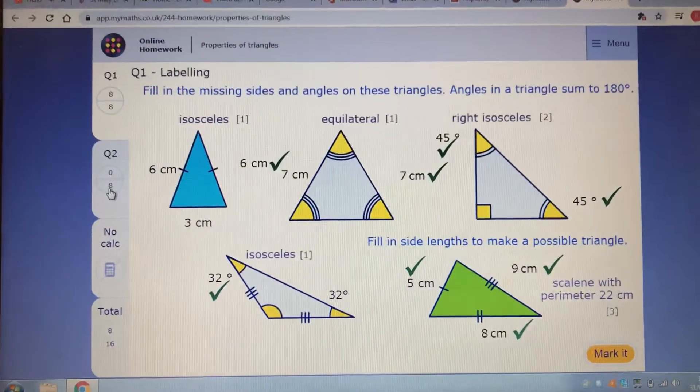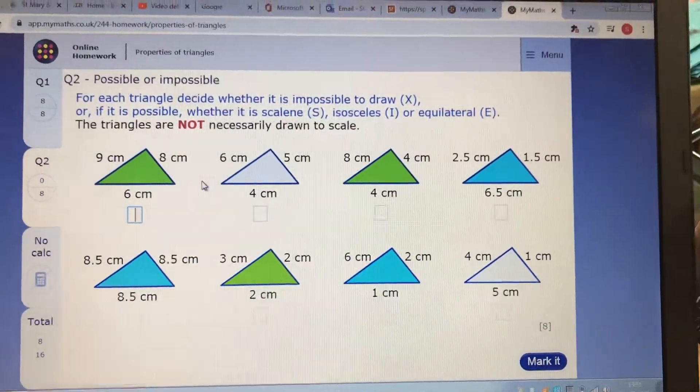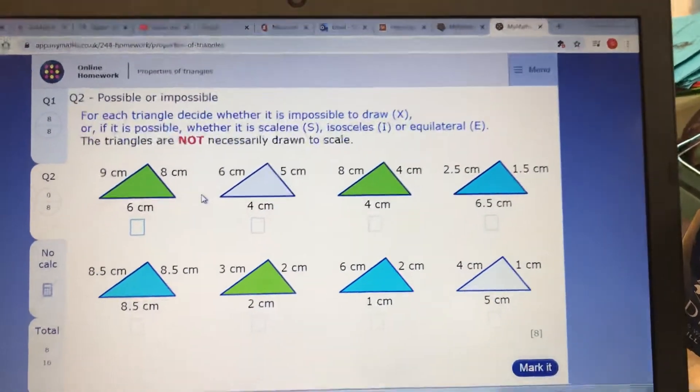Now the second part was a little bit harder. For each triangle, decide whether it's impossible. You have to put an X, but if it is possible, S, I or E for scalene, isosceles and equilateral.